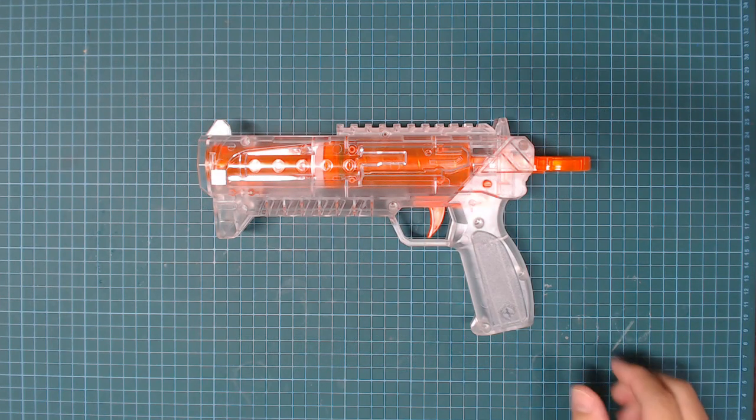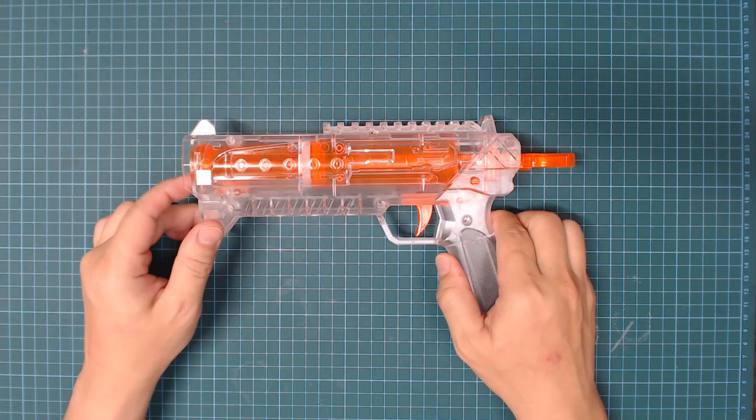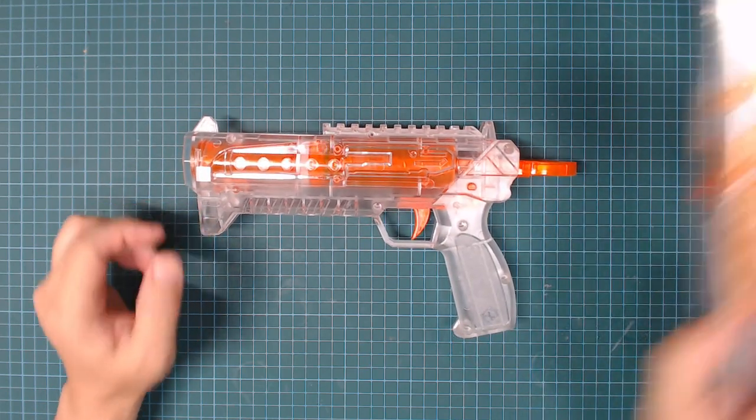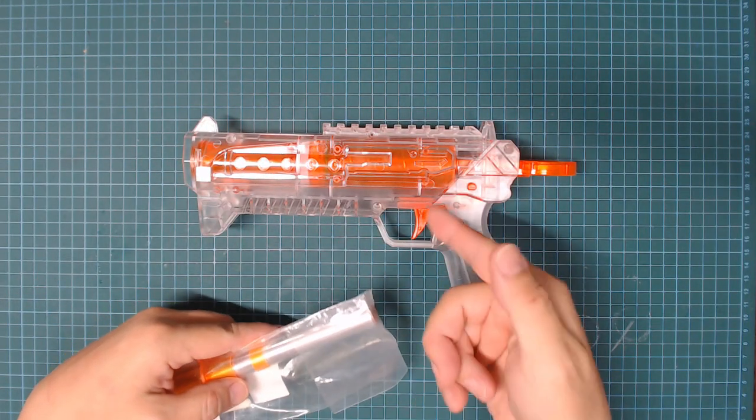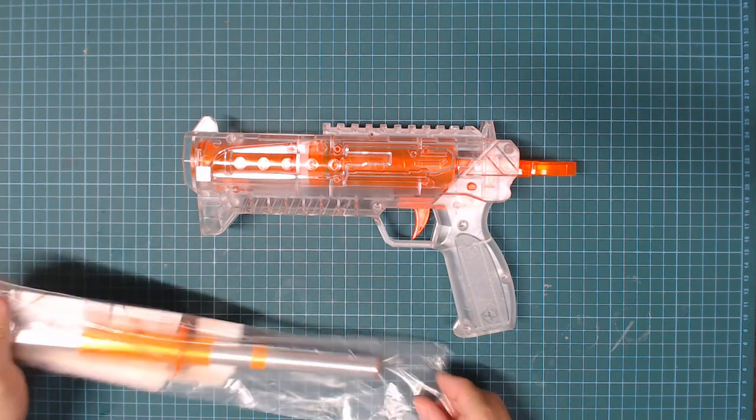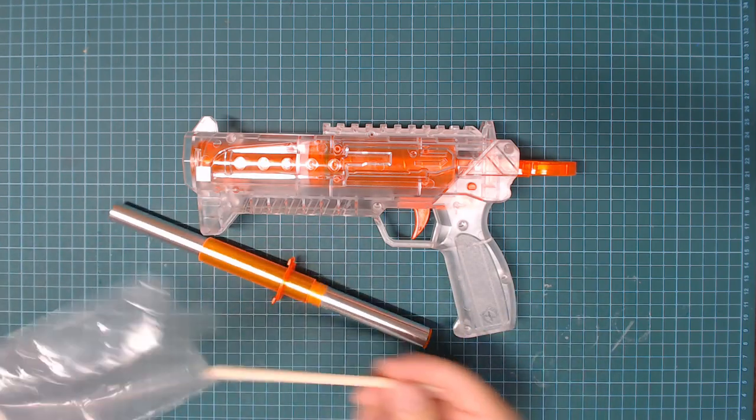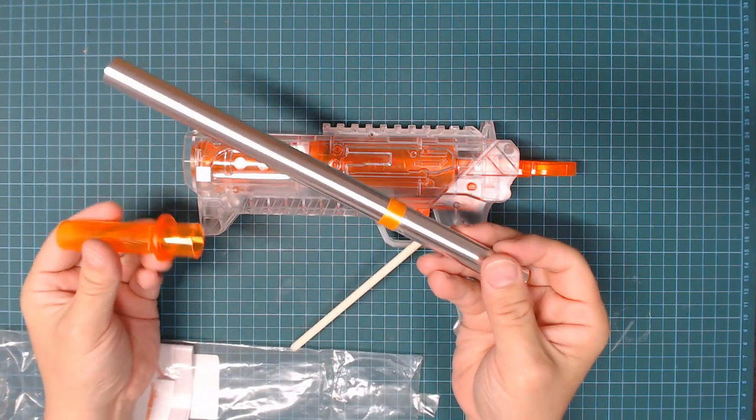Hi guys, Tungsten here. So now we're going to convert this thing into a blaster that should shoot short length darts. If you missed my previous video, it was the unboxing and review of this Worker Cheetah. So today, basically we're just going to look at how we can convert it into a short length dart blaster with the SS kit provided by Worker.